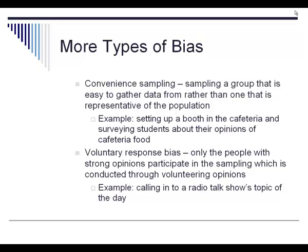Convenient sampling is a biased way to sample — this is when you sample a group in a way that's easy for you to conduct, but it doesn't effectively represent the population. For example, setting up a booth in the cafeteria and surveying students about cafeteria food is a convenient sample. However, not everybody eats in the cafeteria, people who don't like the food probably wouldn't be there, and there's a potential for people to not even stop by the booth and have their opinions unheard.